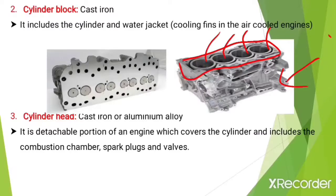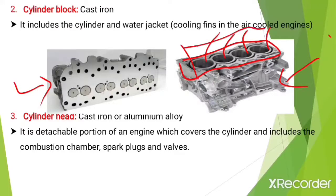The third component of the IC engine is the cylinder head, made up of cast iron or aluminium alloy. It is the detachable portion of the engine which covers the engine and includes the combustion chamber, spark plugs, and walls. The cylinder head also forms the combustion space or combustion chamber.